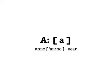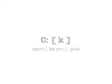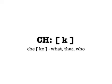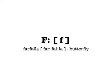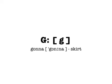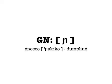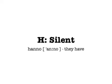Here we go. A as in anno. B as in bello. C as in capro, or C as in cieco. C as in che. D as in donna. E as in e, or E as in e. F as in farfalla. G as in gonna, or G as in gelido. GN as in gnocco. GL as in i. H is always silent, as in anno.